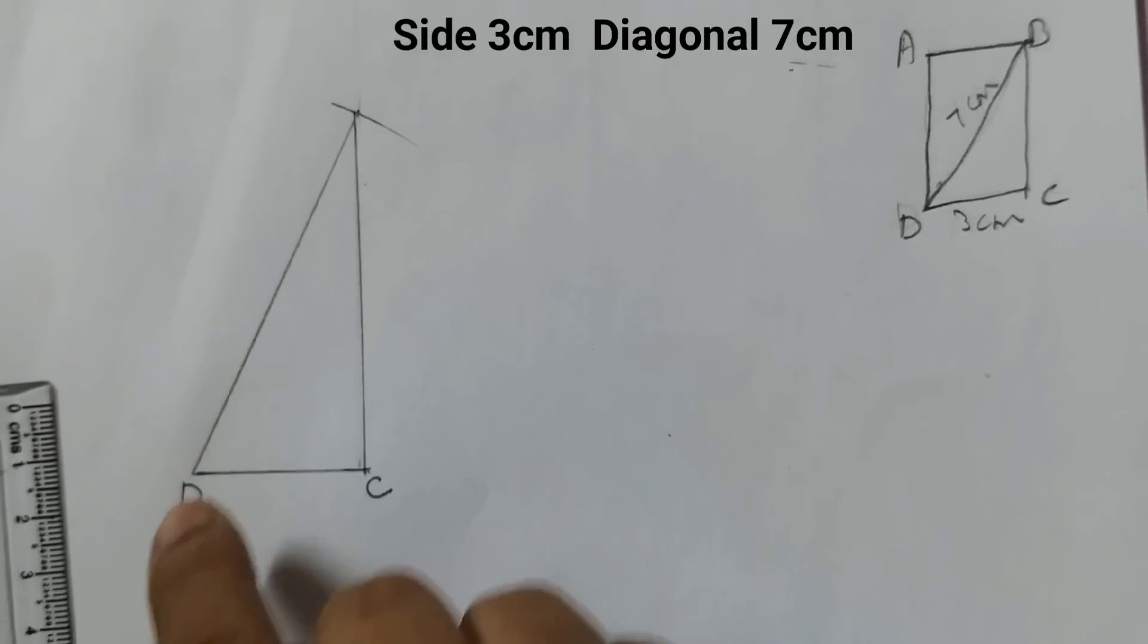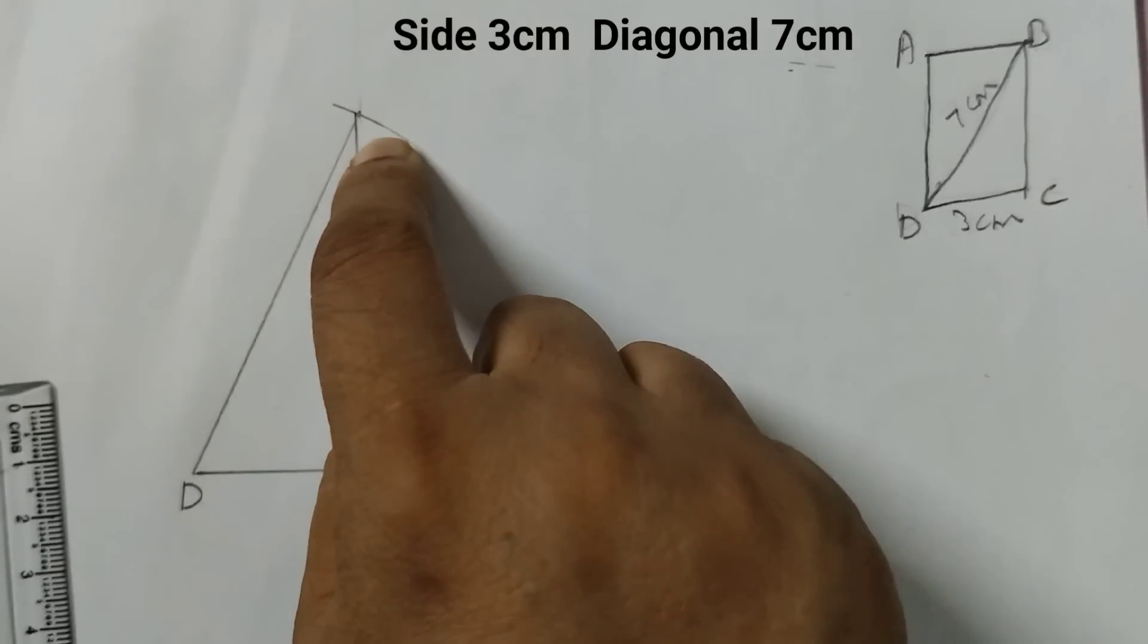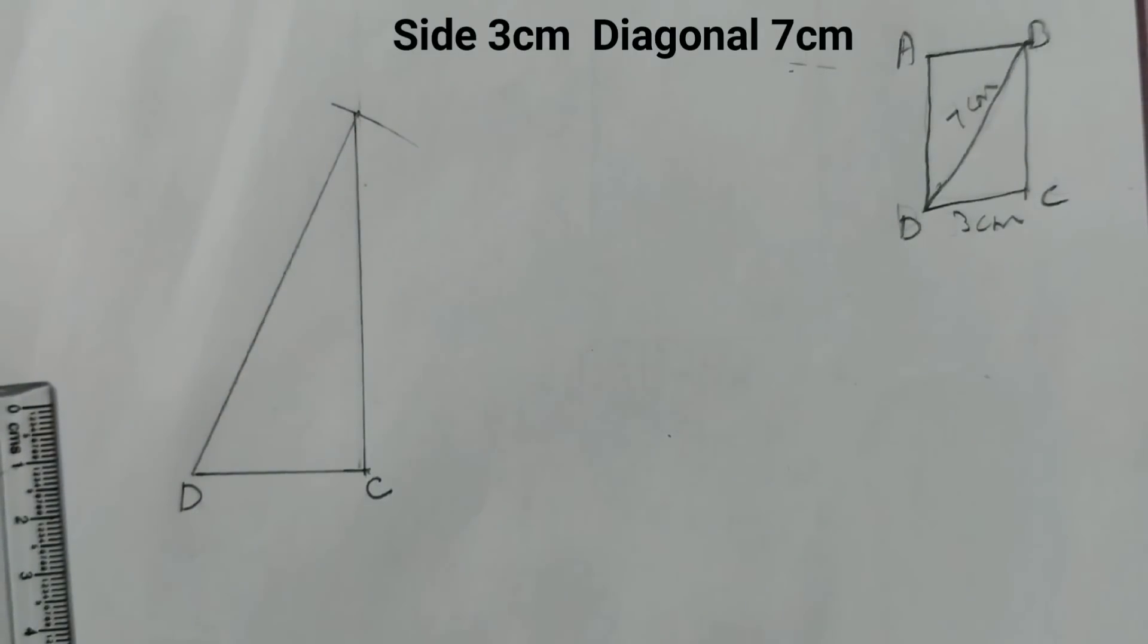If you don't want to draw the diagonal, that is fine. Just from here cut an arc and keep it like this.